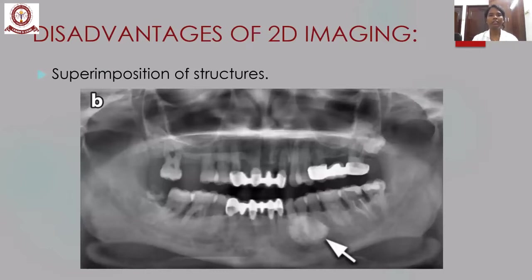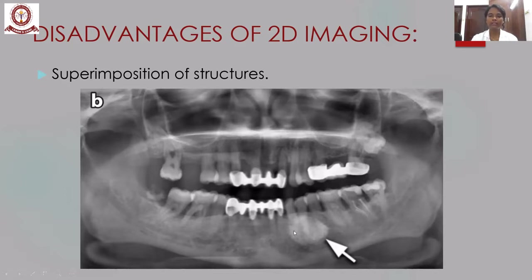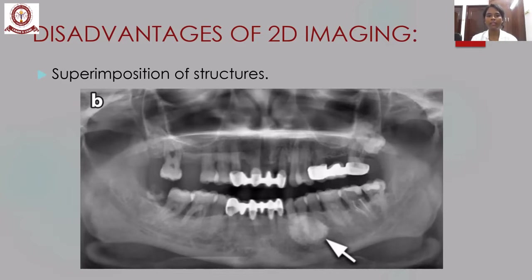The disadvantages of all these two-dimensional imaging modalities is superimposition of structures. All structures present in different regions are superimposed one on another and seen in a single film. For example, this panoramic image shows a radiopaque lesion superimposed over the canine and premolar in the third quadrant. Seeing this image, we cannot decide whether the lesion is present inside or outside the mandible. The exact location cannot be identified precisely using two-dimensional imaging — it is only apparent.